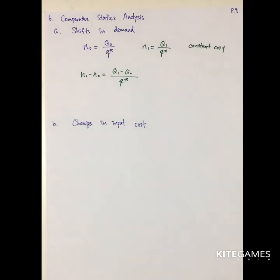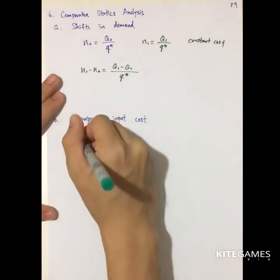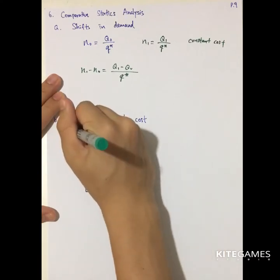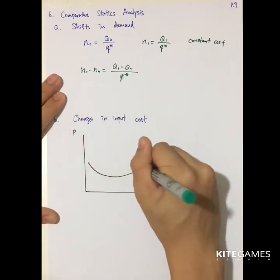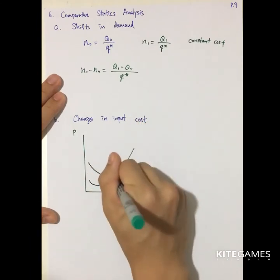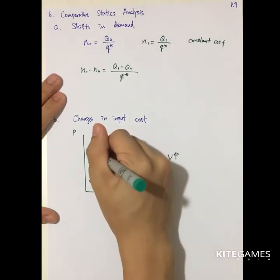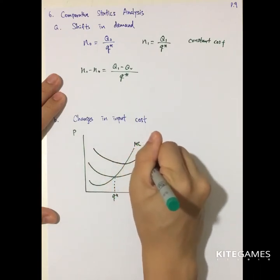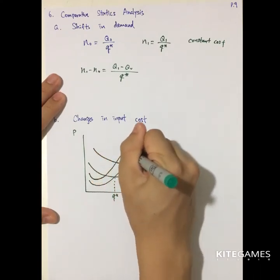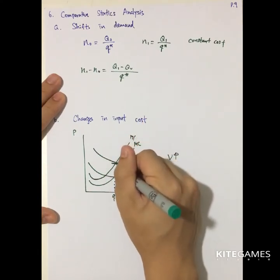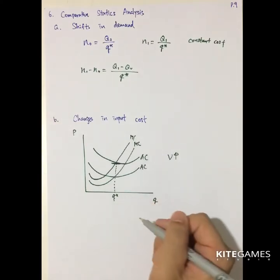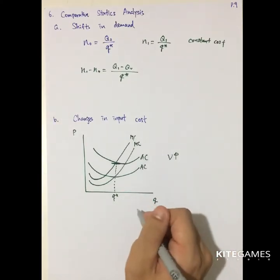Next is the change in input price. Using the diagram: will an increase in input cost increase or decrease the output of individual firms? The firms produce at the minimum average cost. If input price V increases, the average cost will be higher and marginal cost will also be higher. The output may increase or decrease — it depends on the relative shift of MC and AC.